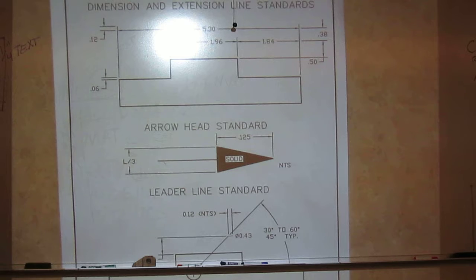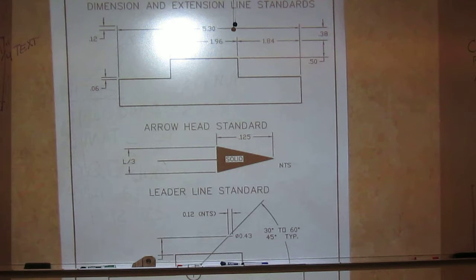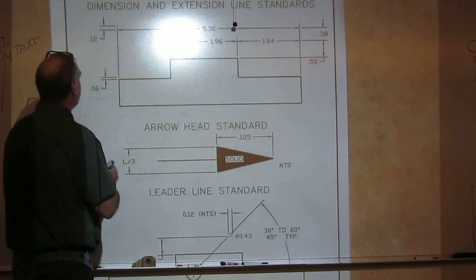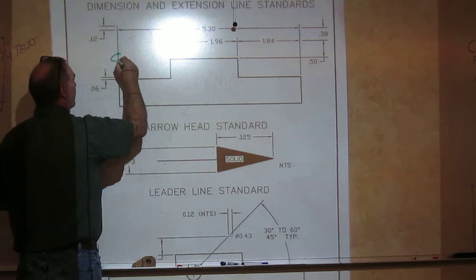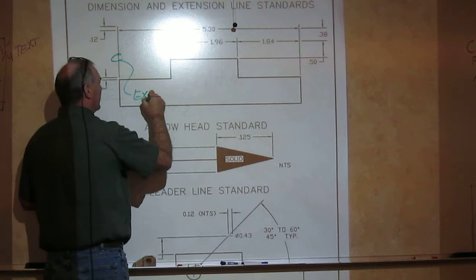In essence, we're going to bring three different line types in here when we do dimensioning. The first line type is called an extension line. And you see one right here. So that line is an extension line.